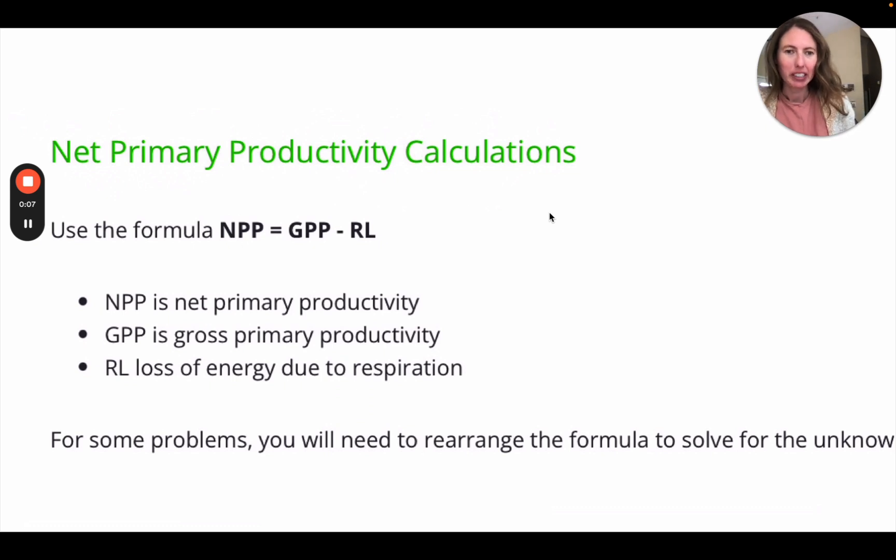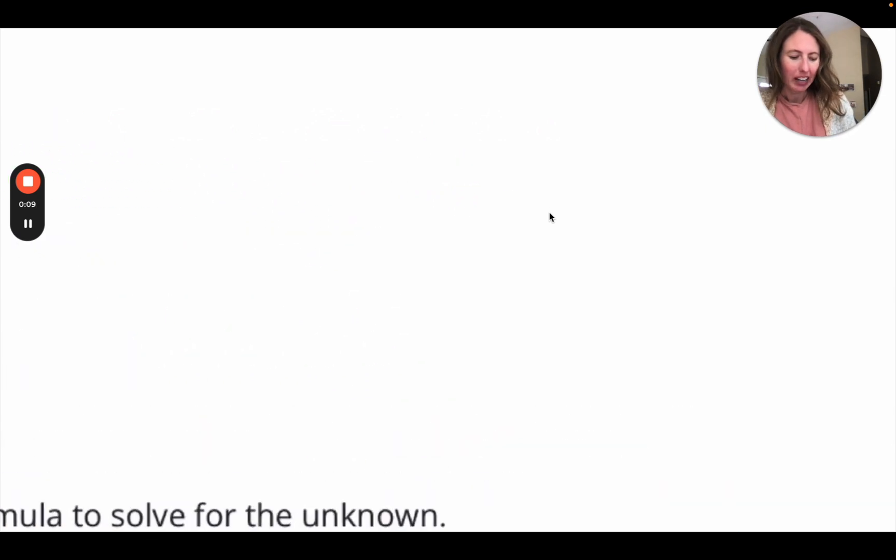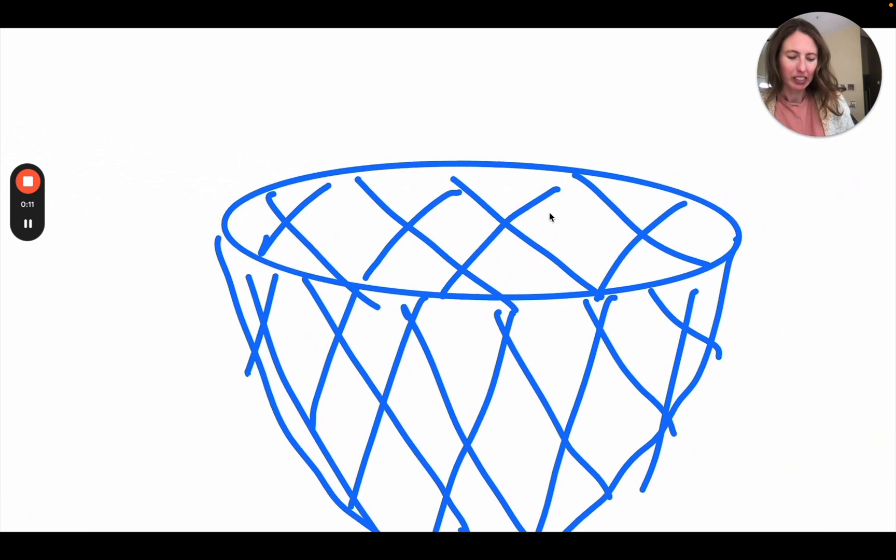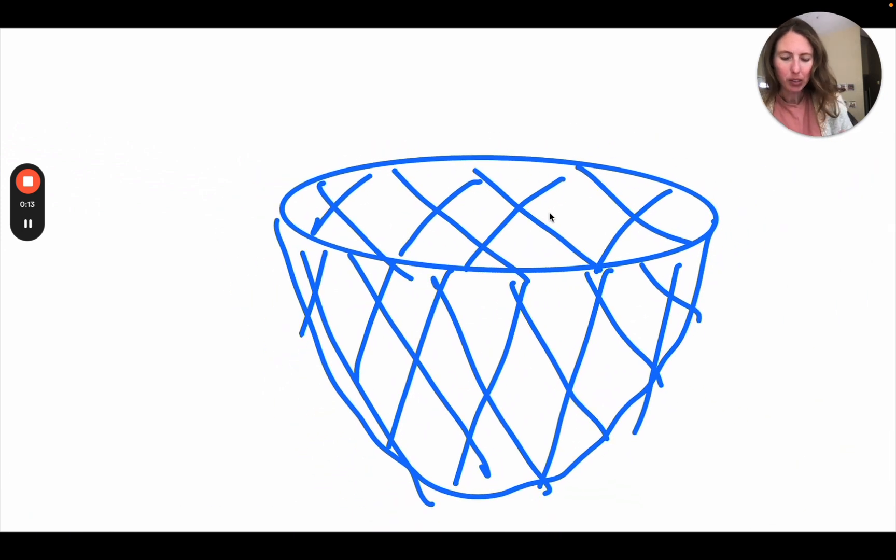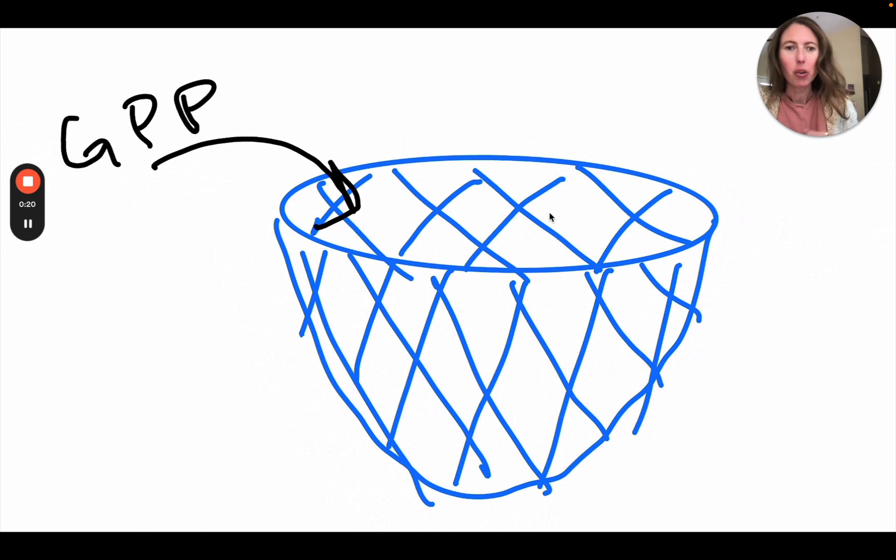To think about net primary productivity, you can think about an actual net. That's how I think about it. So the gross primary productivity is what goes in. And this is everything that goes in. This is the total rate at which the photosynthesizers are producing energy in an ecosystem.